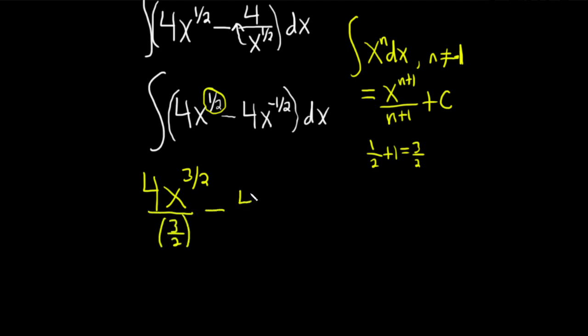Minus four. Then negative one-half plus one is one-half. We take negative one-half. We add one and that gives us one-half. This is one-half. And then you divide by one-half. And then we have our constant of integration, capital C.